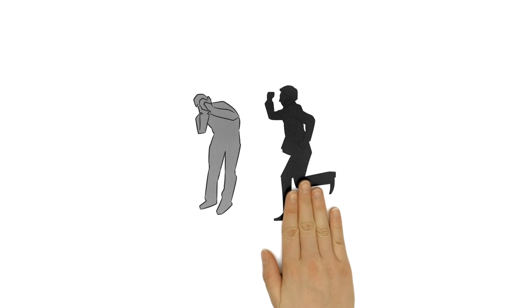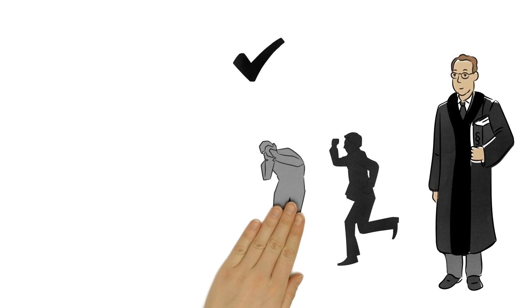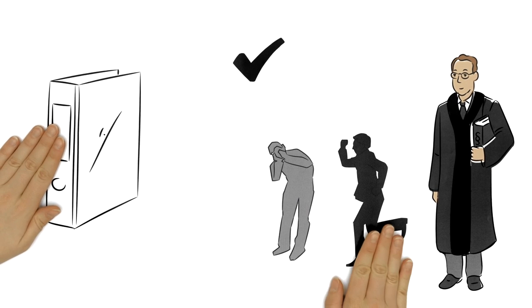If there is evidence of a crime, the prosecutor will bring action to the court. Otherwise, they will close the investigation.